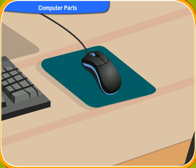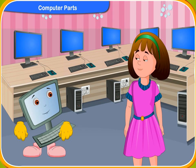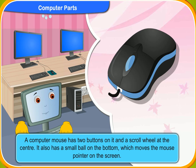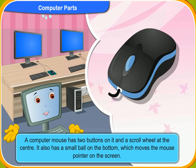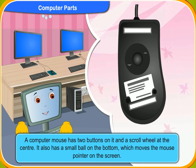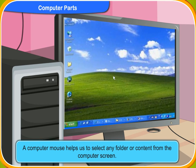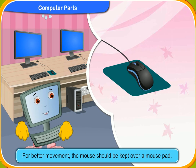What is this, Klico? It is a wire attached to it and it looks like a tail. It looks like a mouse. It is a mouse, Rennie. A mouse? How can it be? It is not a living thing. It is a computer mouse, Rennie. Look, it has two buttons on it and a scroll wheel at the center. It also has a small ball on the bottom, which moves the mouse pointer on the screen. A mouse helps us to select any folder or content from the computer screen. For better movement, the mouse should be kept over a mouse pad.